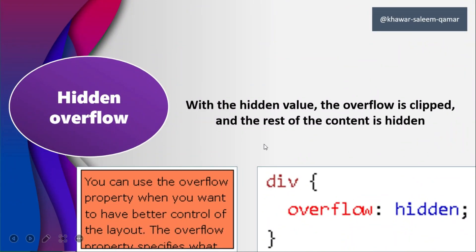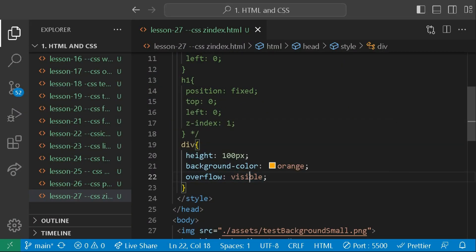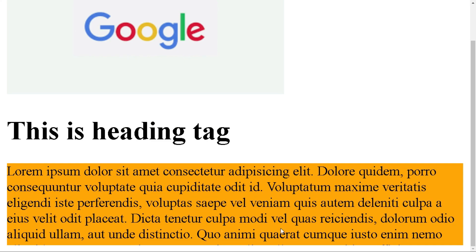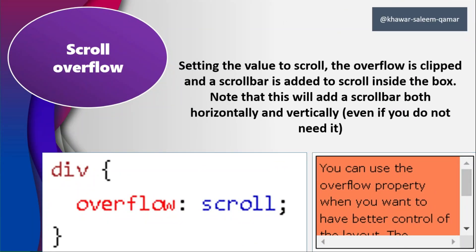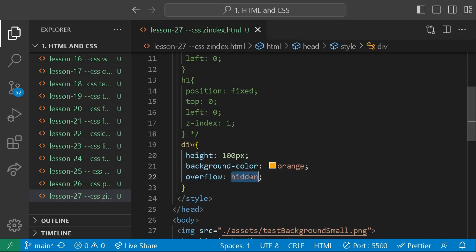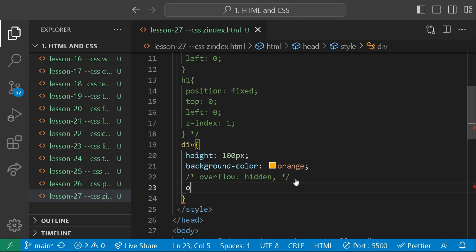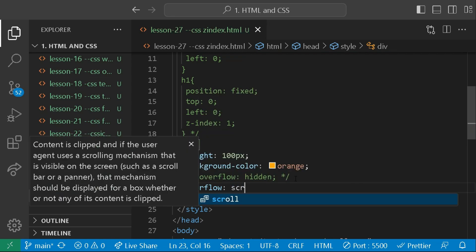This is by default the visible value of overflow property. If I explicitly give it overflow visible it won't affect the layout. The second property is overflow hidden — it hides the text that is overflowing the div, so the text that was outside is now clipped. The next property is overflow scroll. With scroll we get scroll bars on both sides even if we don't need them for the vertical or horizontal side.